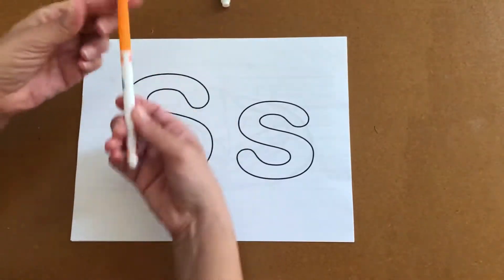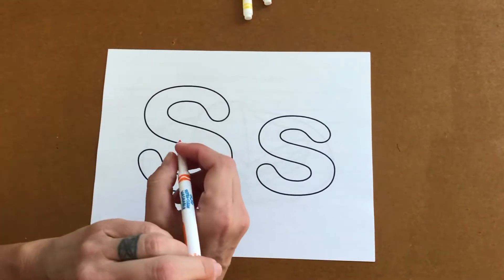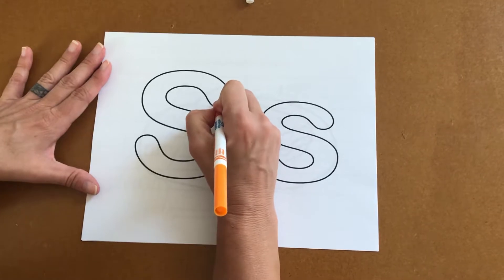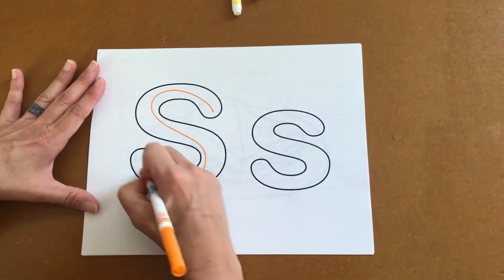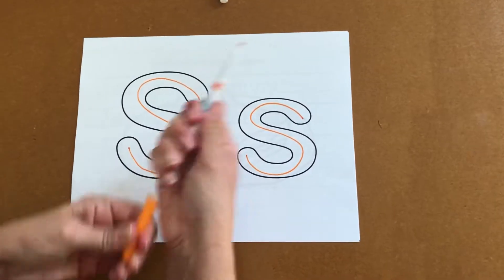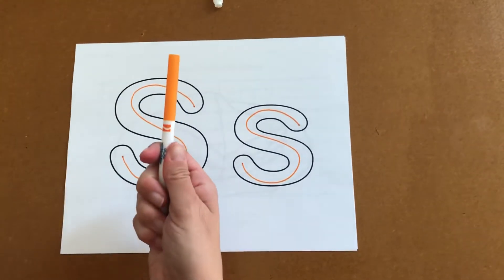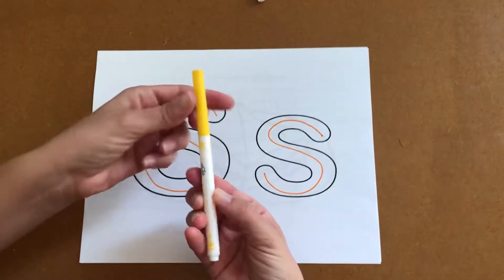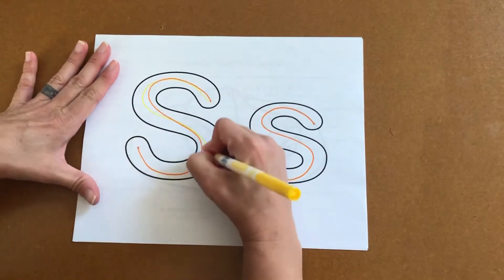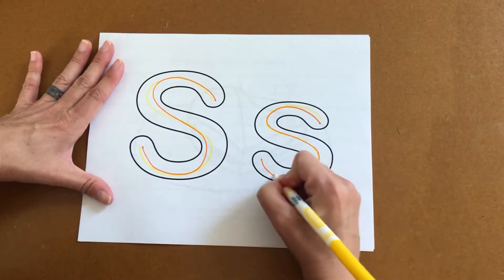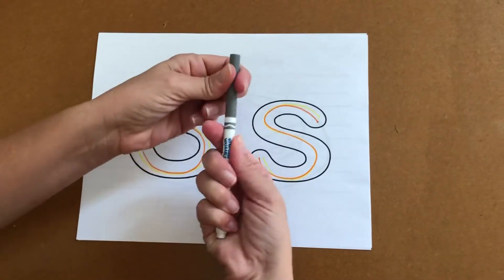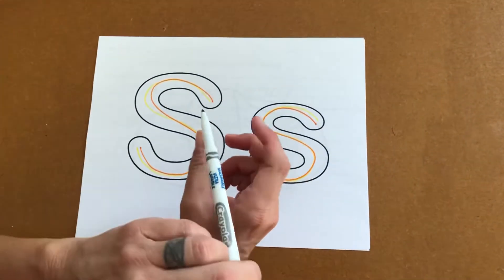Now pick a marker and we're going to do rainbow letters. So always starting with the letter on the left, which is the capital. It starts at the top, it goes whee, stop. Don't forget the lowercase in the same color. Once you've traced the capital and the lowercase in one color, put the lid back on and pick another color. Maybe you chose the same color as me or maybe you chose a different color. Either way is just great. One more color. I'm going to trace the capital and the lowercase one more time.